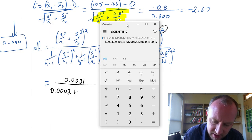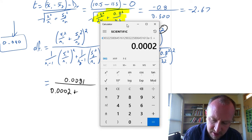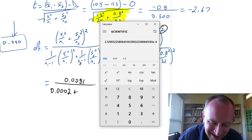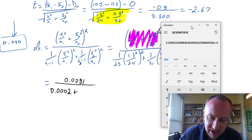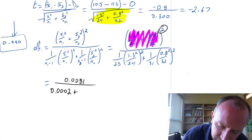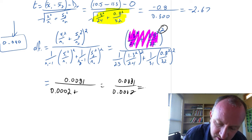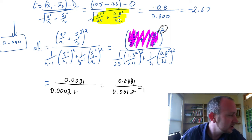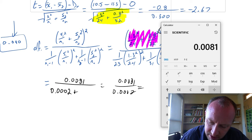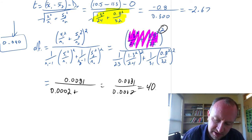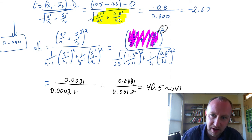And this is 0.8 squared divided by 32 equals squared divided by 31. And then I'm going to add to that this other bit that we've already got. 0.0002 equals, so there's my denominator. 0.4 decimals, so that's 002, so that doesn't change much at all. 0.0081 divided by 0.0002. And this is going to be 0.0081 divided by 0.0002. 40.5. So let's round that to 41 degrees of freedom.